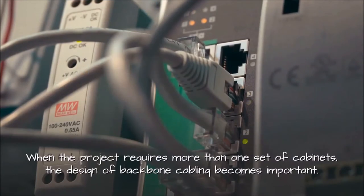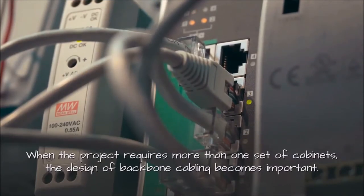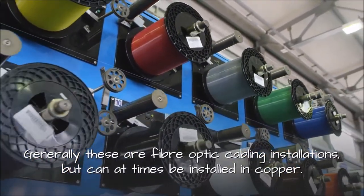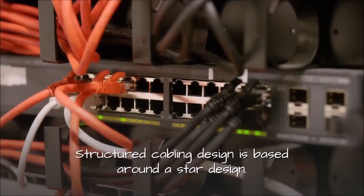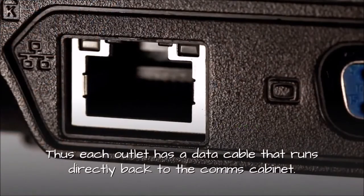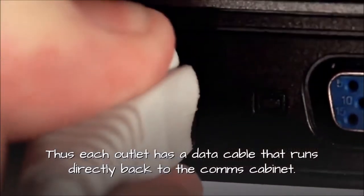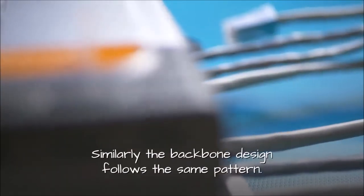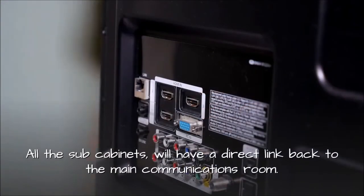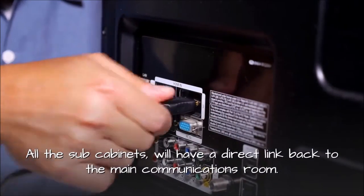Backbone cabling. When the project requires more than one set of cabinets, the design of backbone cabling becomes important. Generally these are fiber optic cabling installations, but can at times be installed in copper. Structured cabling design is based around a star design. Thus each outlet has a data cable that runs directly back to the comms cabinet. Similarly the backbone design follows the same pattern. All the sub cabinets will have a direct link back to the main communications room.